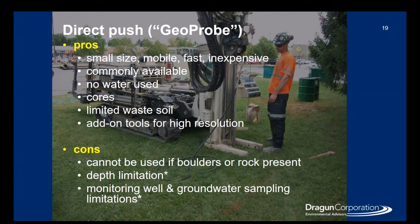Some of the cons are that they cannot be used on sites that have boulders or rocks. There's a depth limitation — some of the smaller rigs, depending on the geology, can only get to about 15 feet, though larger rigs may get deeper. But they're still limited compared to the hollow stem auger. Lastly, the monitoring well and groundwater sampling could have limitations. A lot of times with this rig, you end up installing a smaller diameter well, so depending on the type of sample and the depth to water, you may have to plan for different types of equipment to collect your sample.